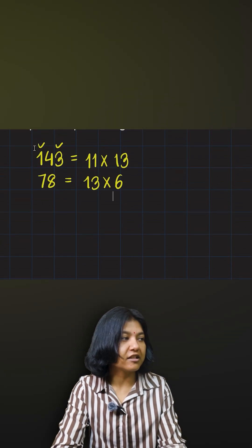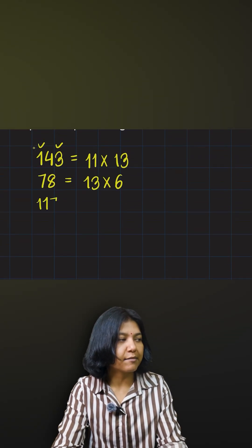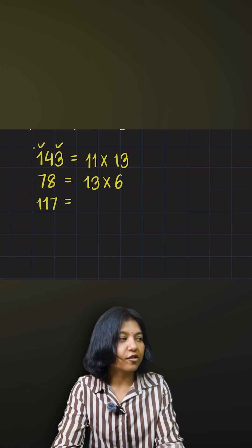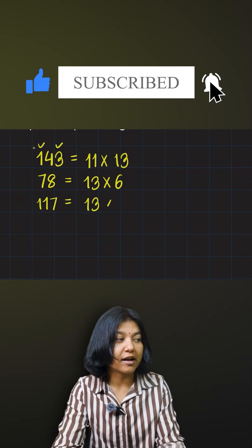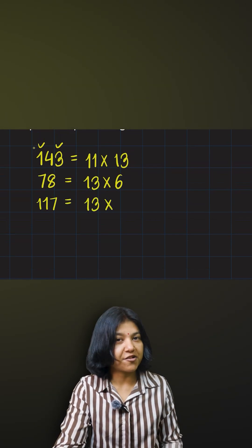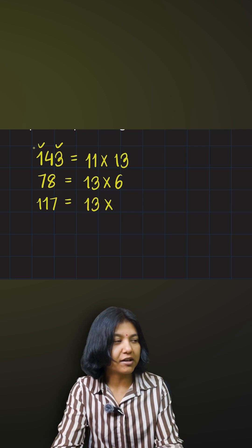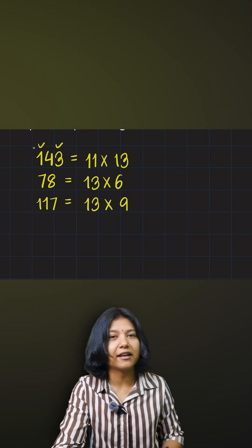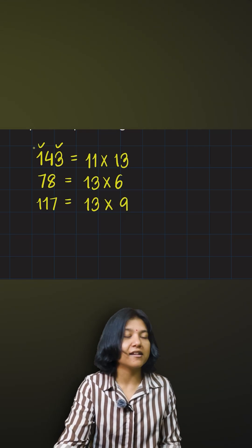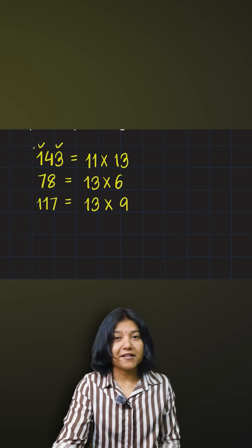Lastly 117. I do not waste much time. I have already seen 13 common, so 13 must appear here again. So I'll try 13 times how much is 117. 3 times 9 is 27, so it's ending with 7, so I can verify with 9. Hence I see that it is divisible.